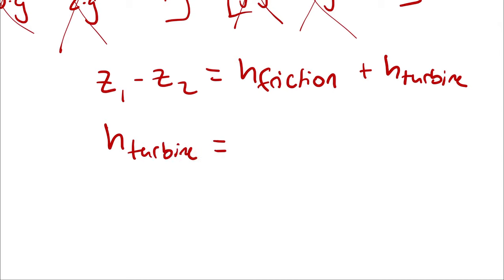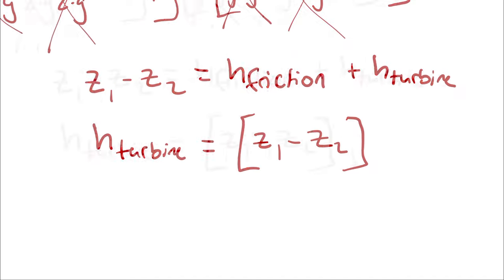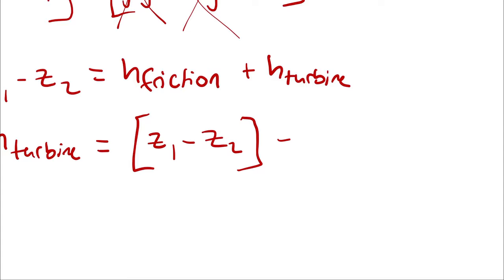So I will rewrite this as the turbine head is equal to Z1 minus Z2 minus the friction head,